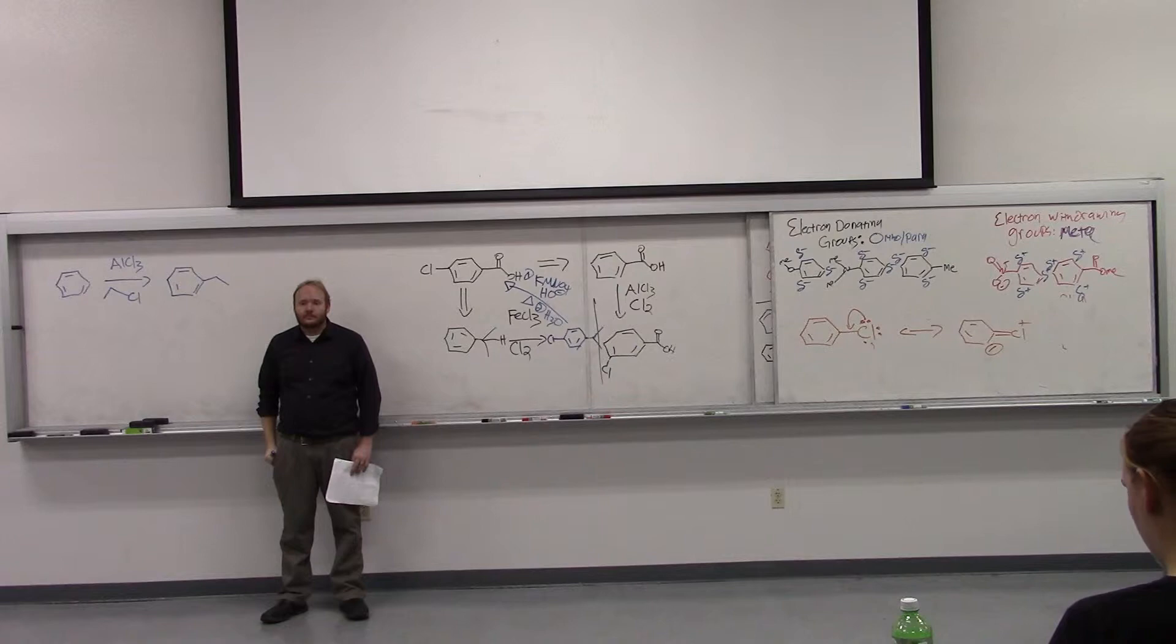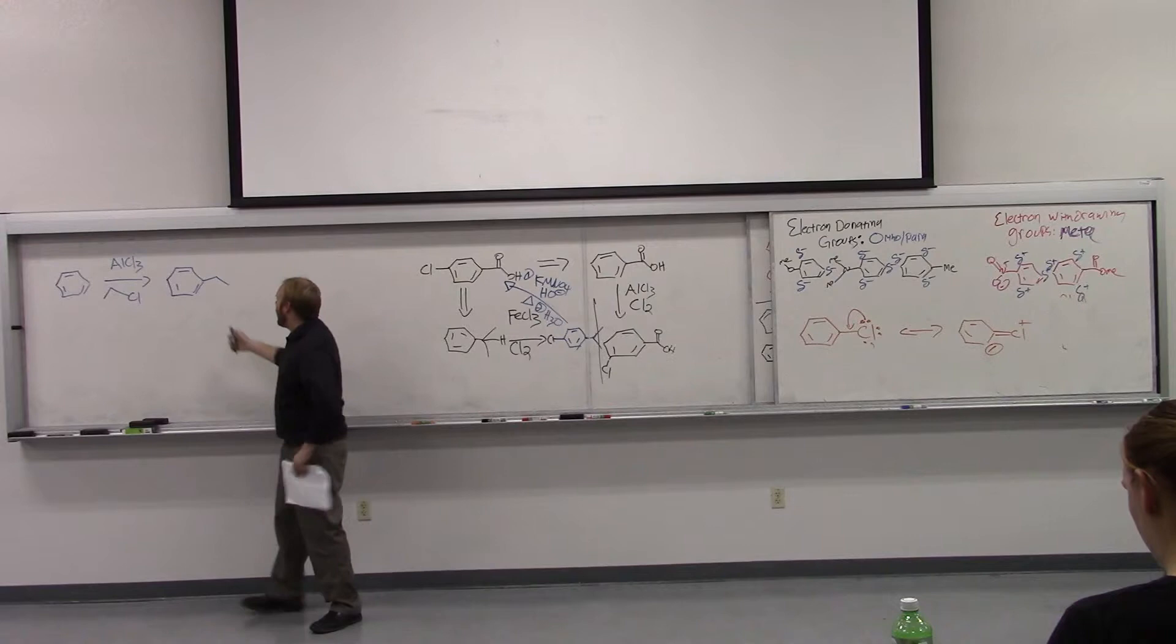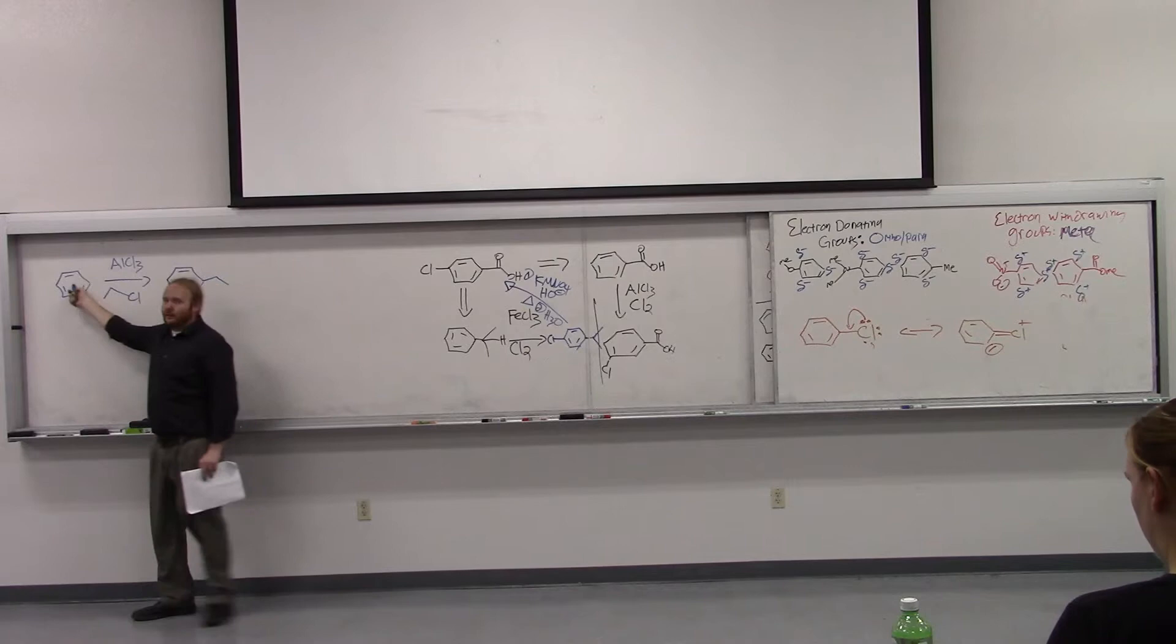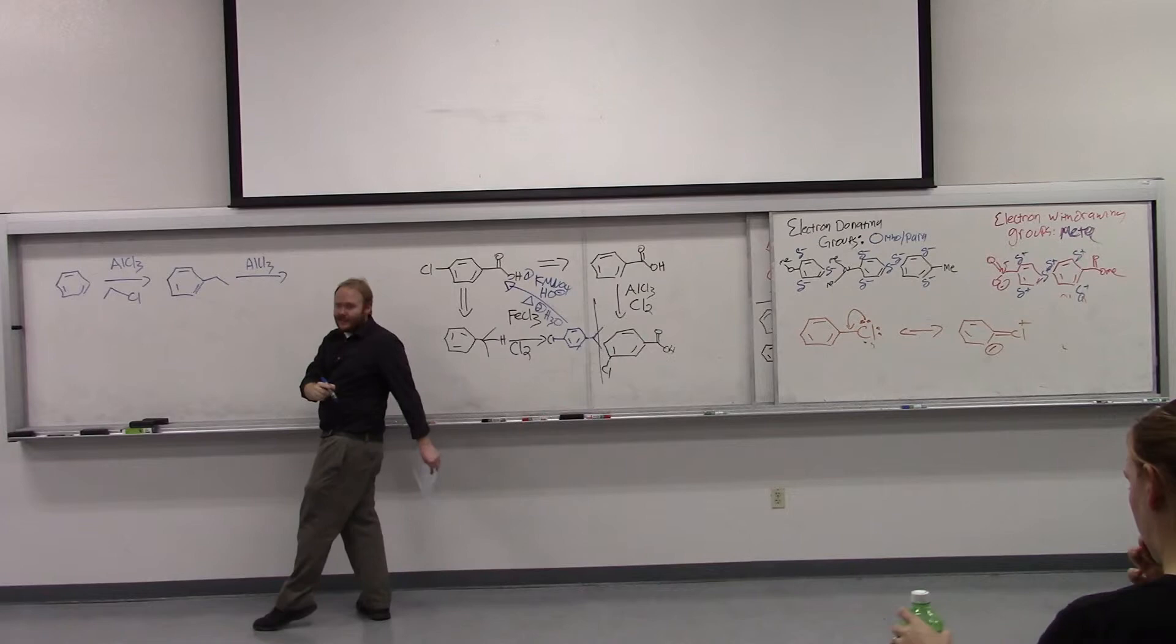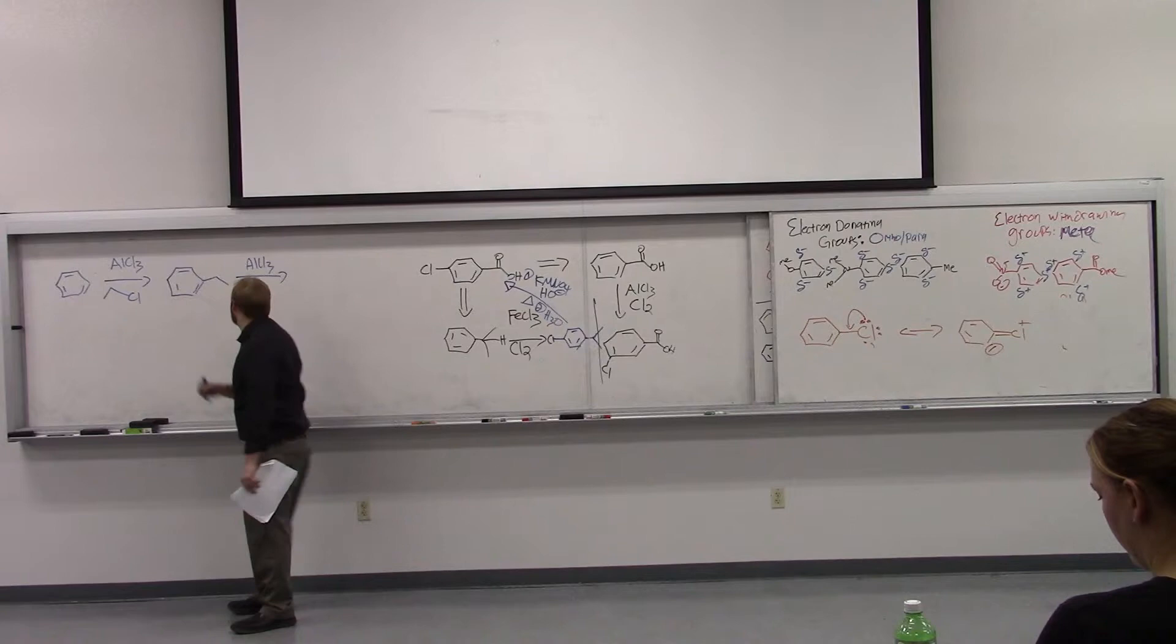It's ethyl benzene, right? Because alkyl groups are electron-donating groups. And so in this case, our monoalkylated product is going to be more reactive than our starting material. So what that means is if you're not careful, we can get a second reaction now, where now our product reacts instead of the starting material. And that will give us a dialkylated product.